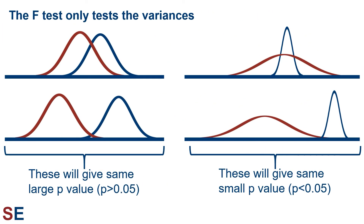Keep in mind that the F-test only tests the variances — it doesn't compare the means or shapes of the distributions. The two left-hand figures would both give the exact same large p-value in an F-test because, even though the means may or may not be very different, the variances are very similar. The two right-hand figures would both give the exact same small p-value in an F-test because, even though the means may or may not be different, it is the difference in variances that matters.